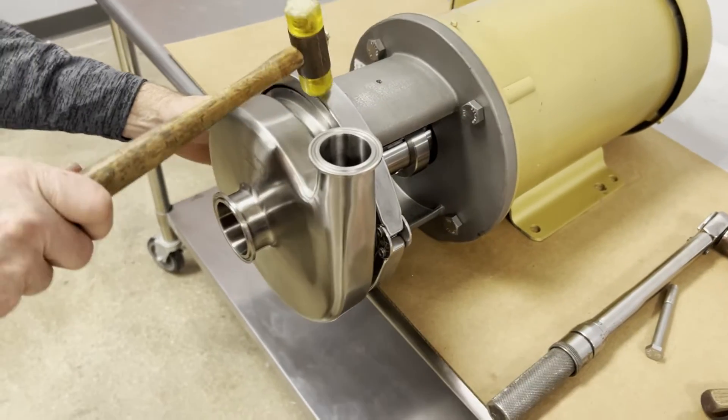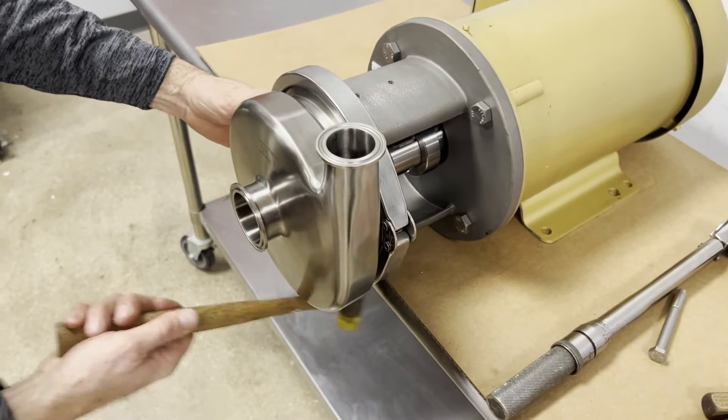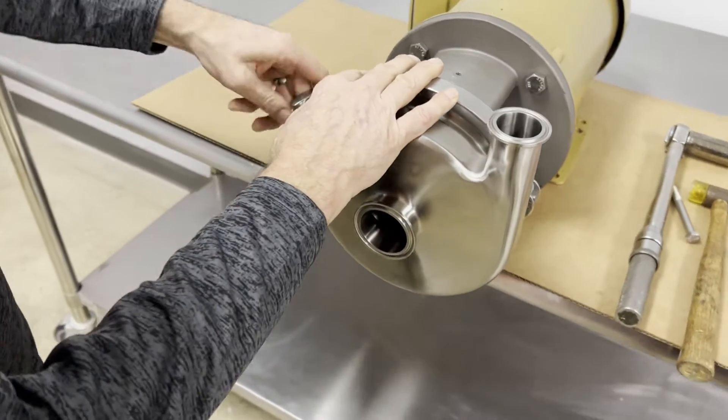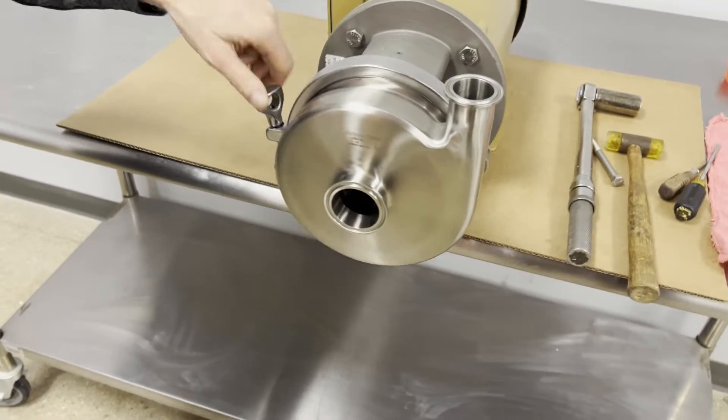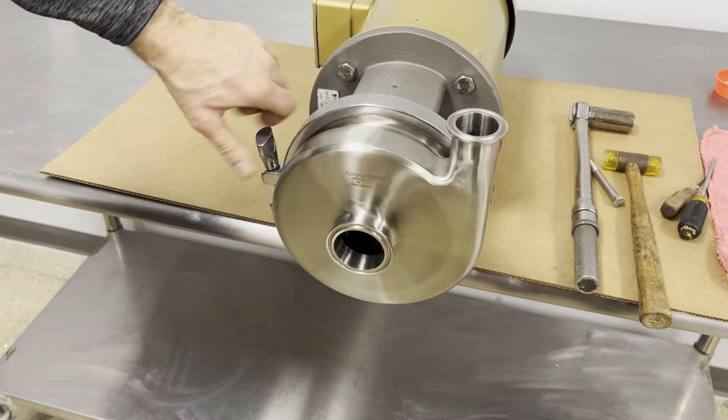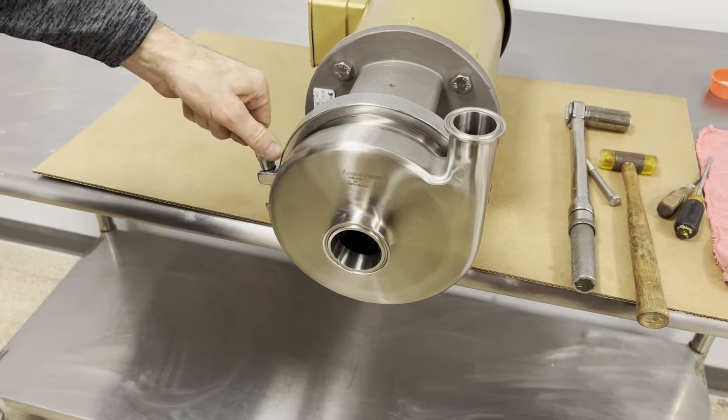Casing goes on. I give it a little bit of a tap with a hammer to get it seated, and then tighten the wing nut down finger tight.